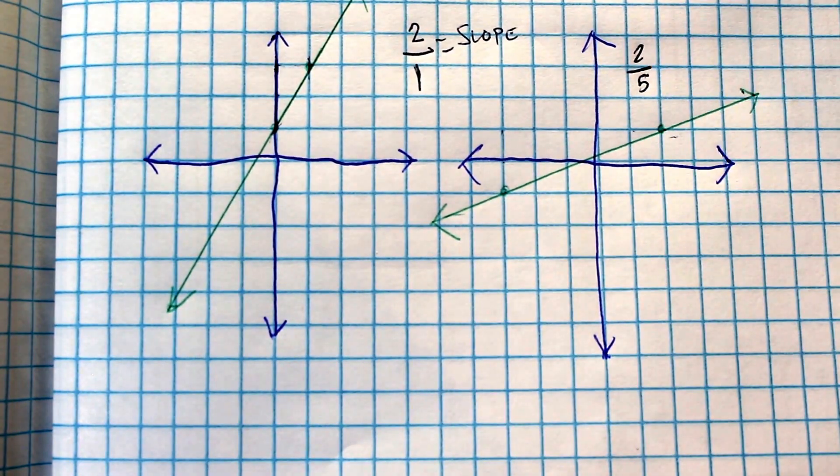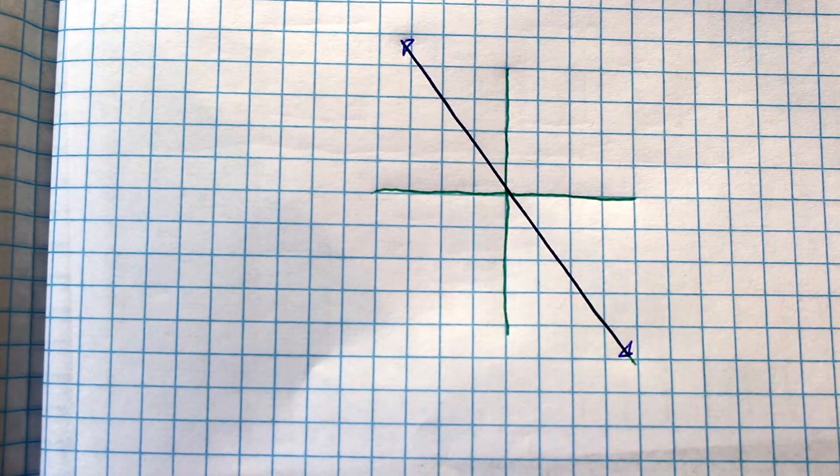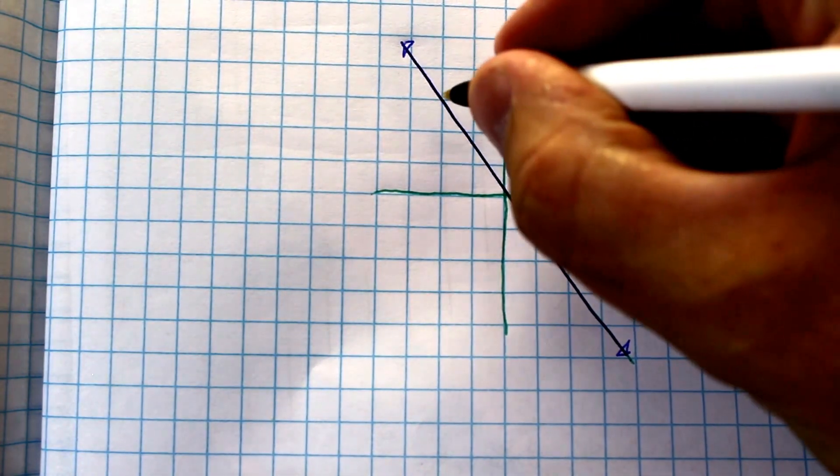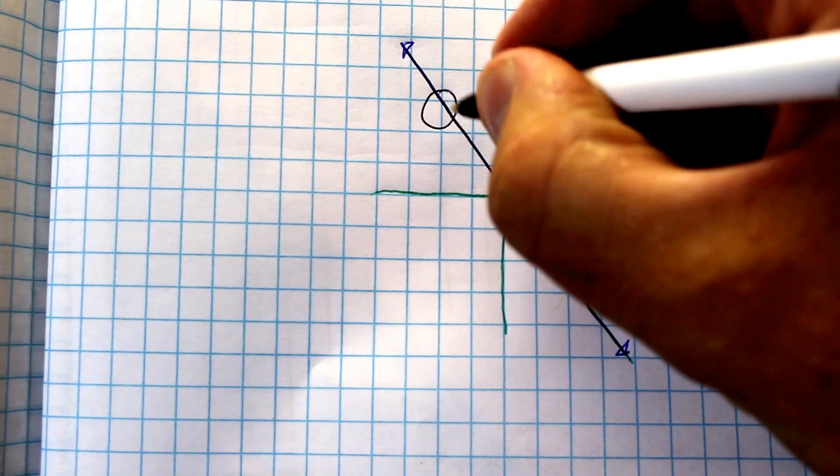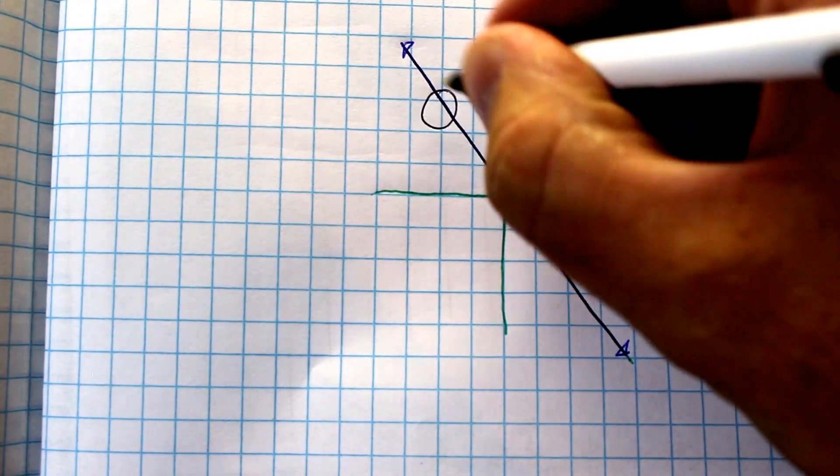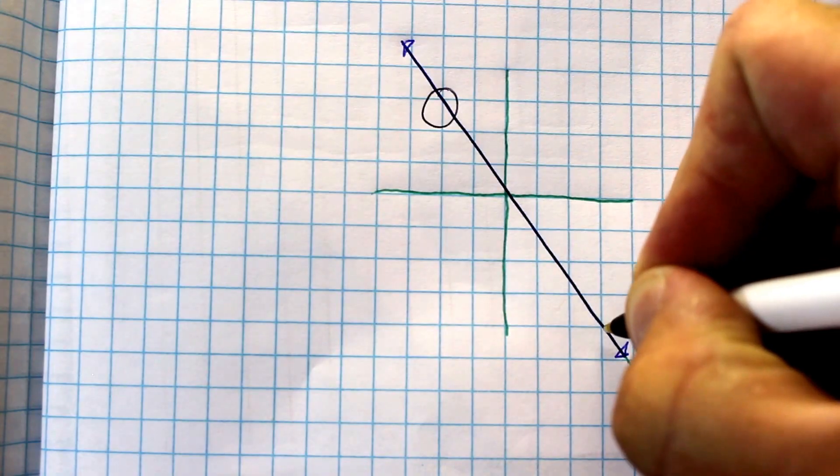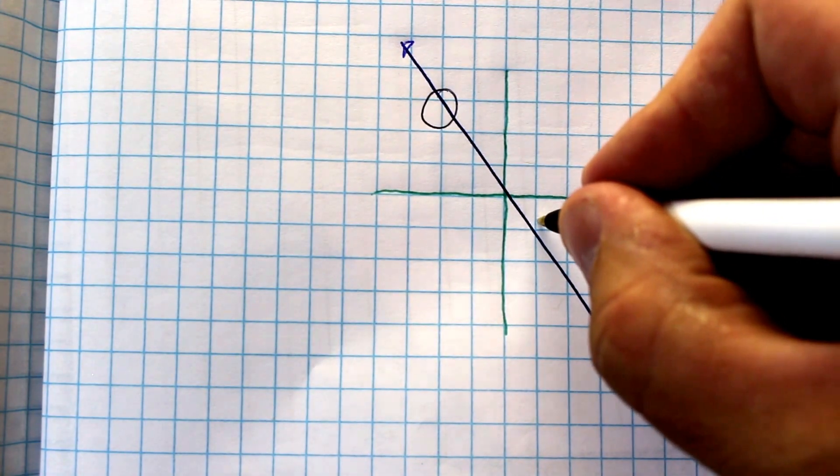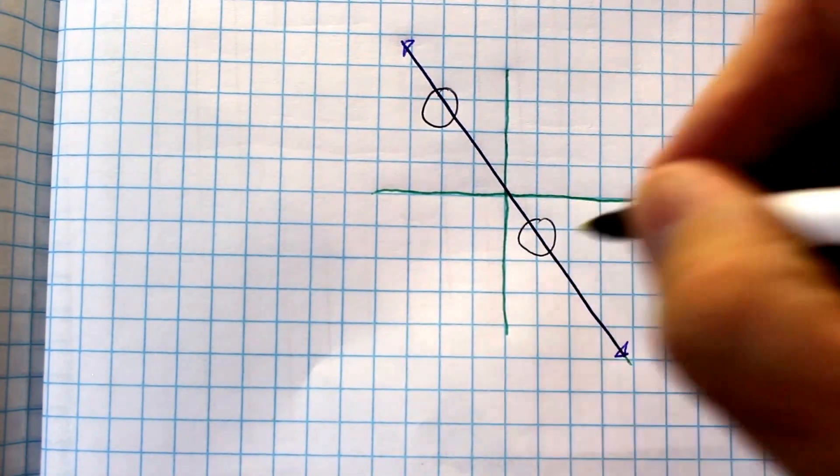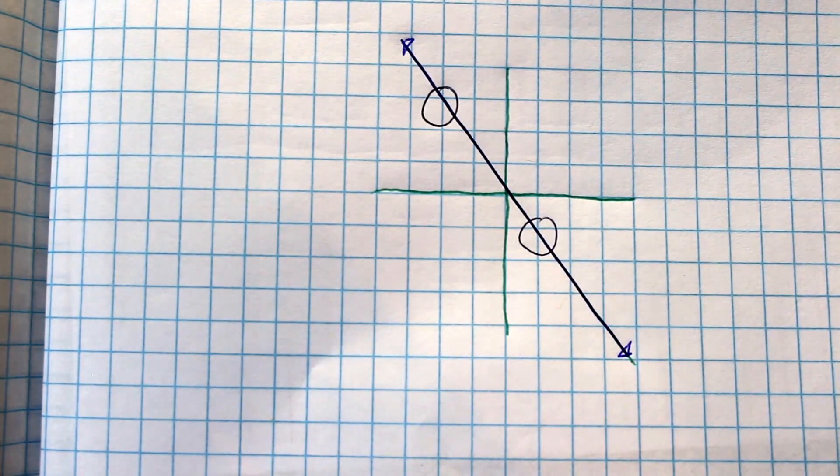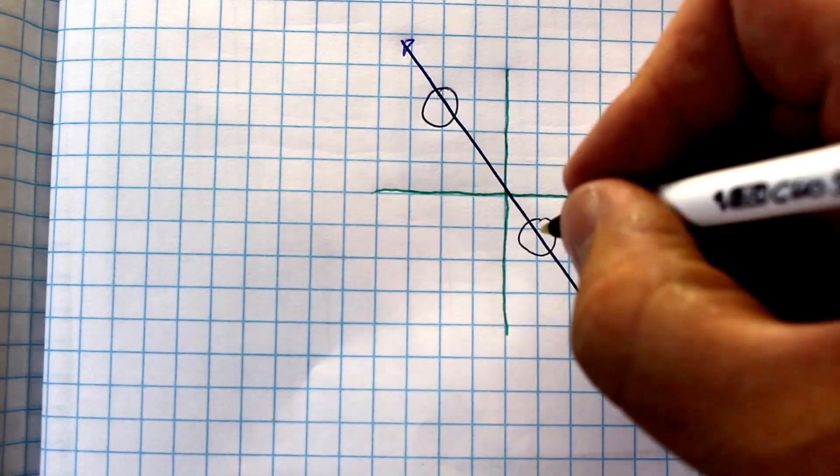Let's look at one more example. In this example, we're going to do the same thing. So we look and find a point right here where our line goes through across, and a point right here where our line goes through across. So we're going to do, again, rise over run, up and over.